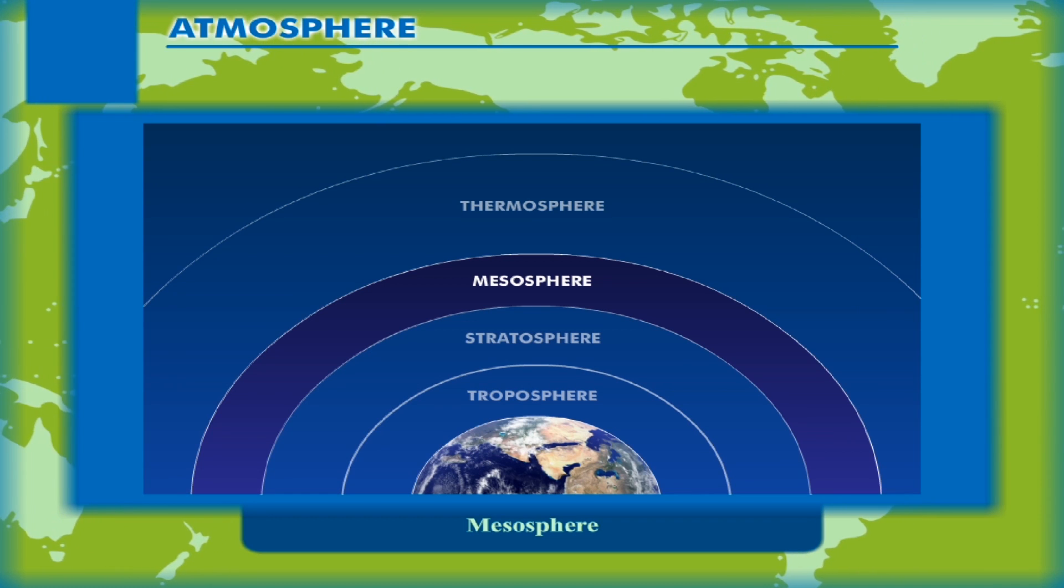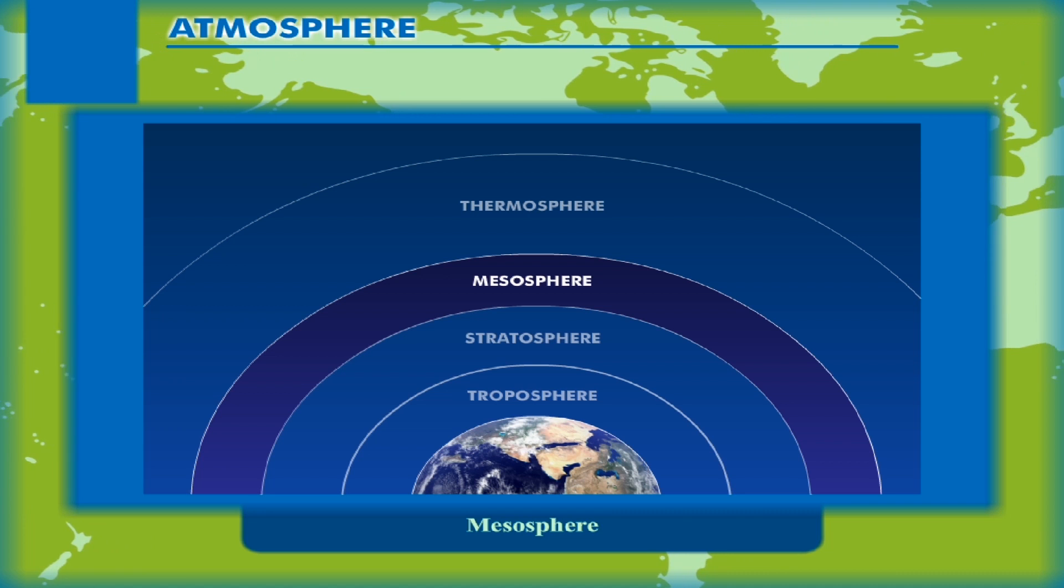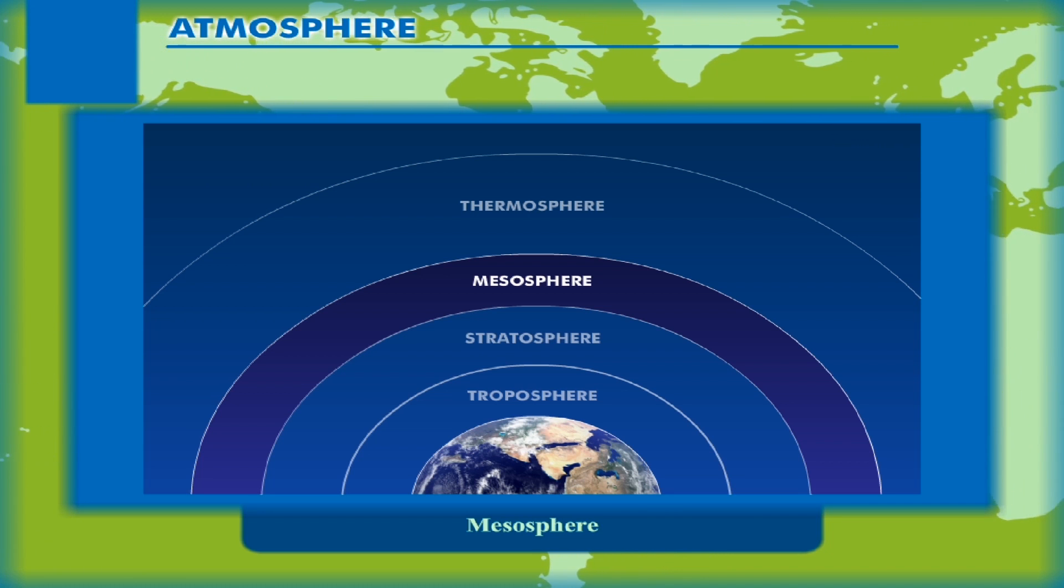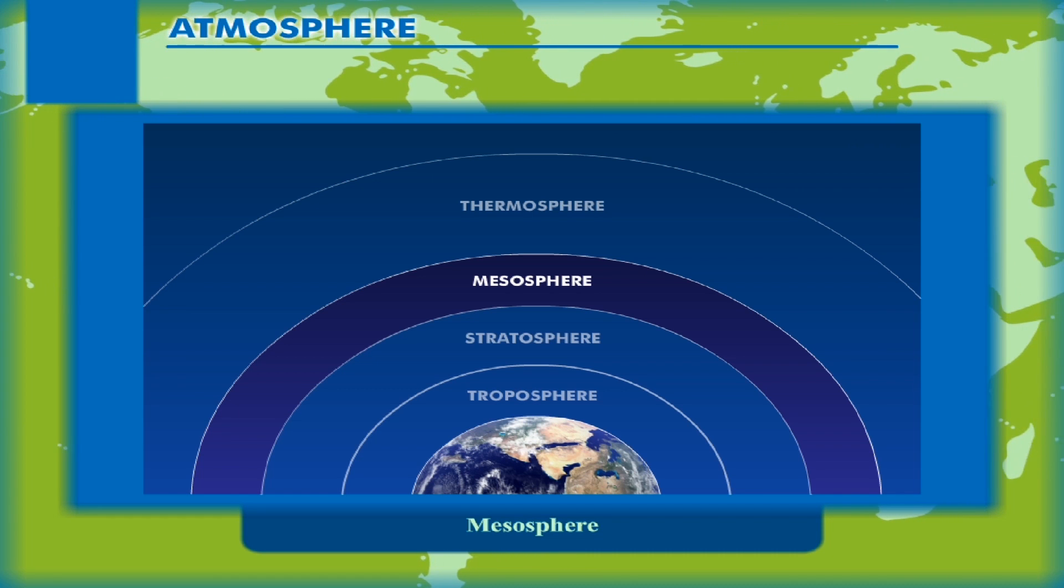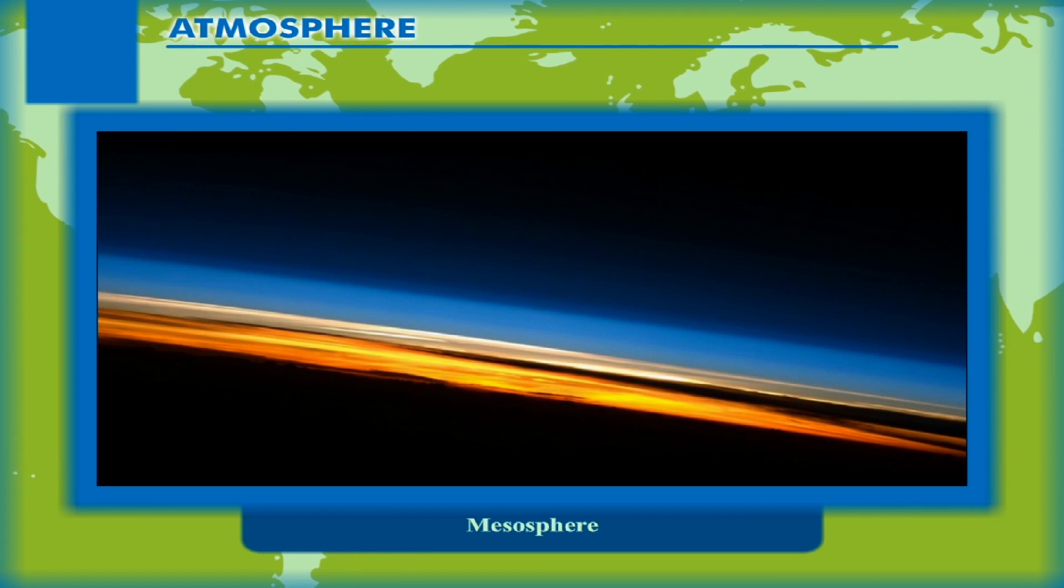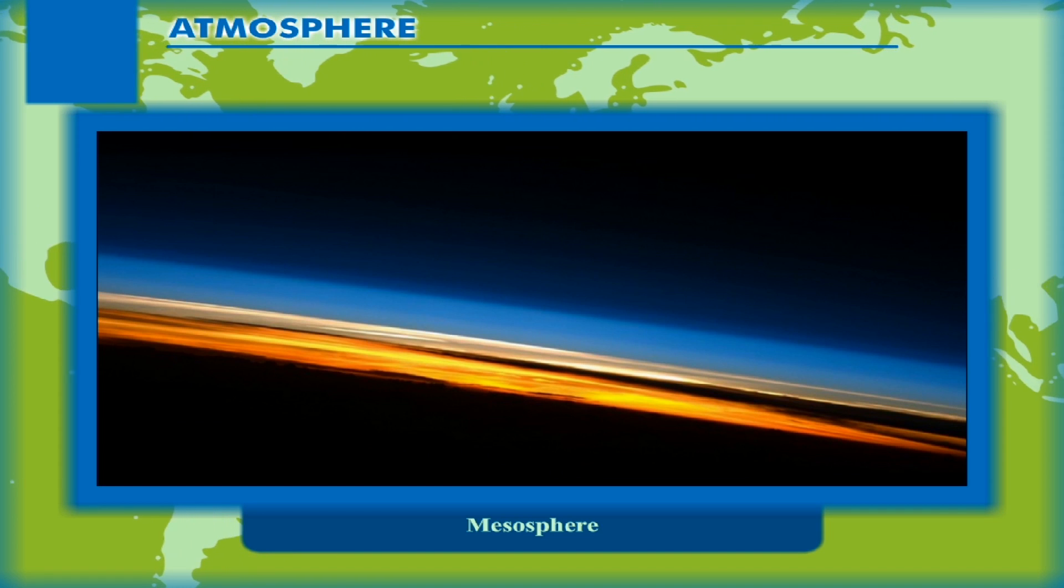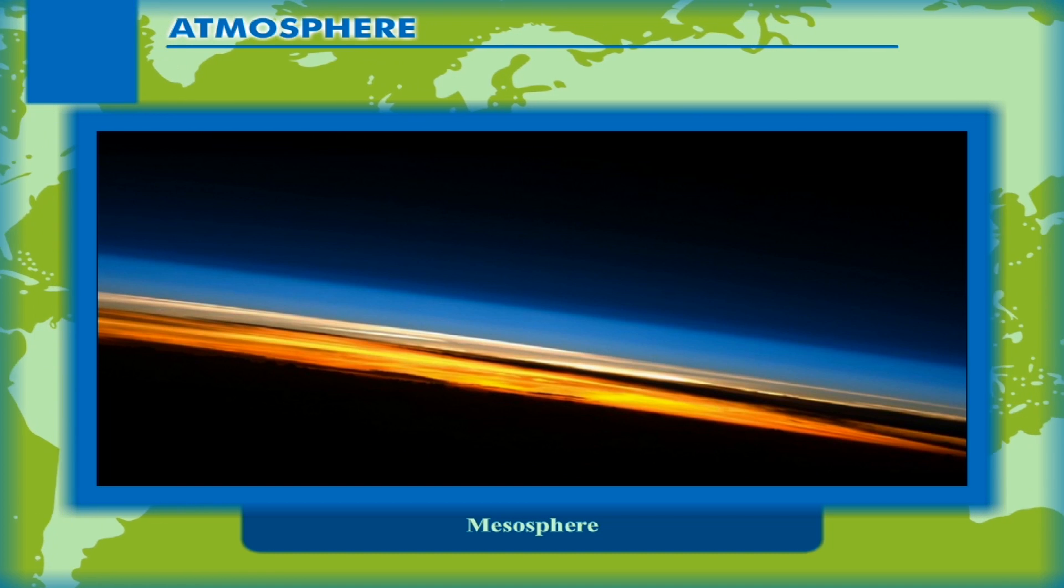Mesosphere: It lies above the stratosphere and extends to about 80 km above the Earth's surface. Here, the temperature decreases with height till it reaches minus 100 degrees Celsius. This layer has the lowest temperature in the atmosphere. It is the coldest layer of the atmosphere. The upper limit of this layer is called mesopause.